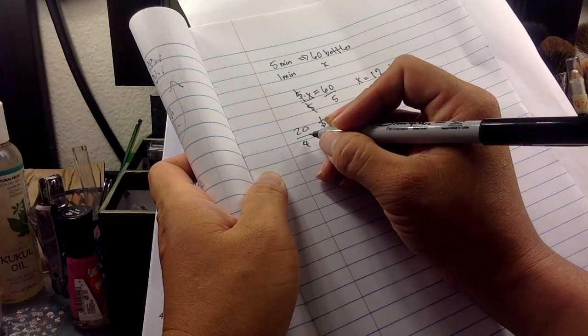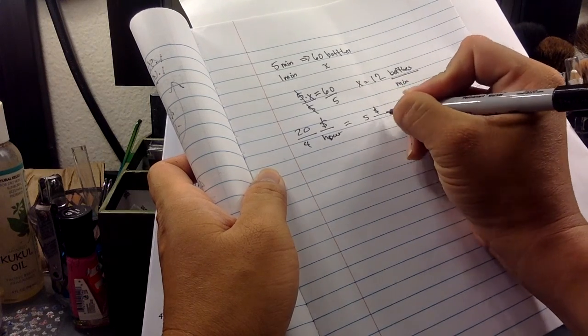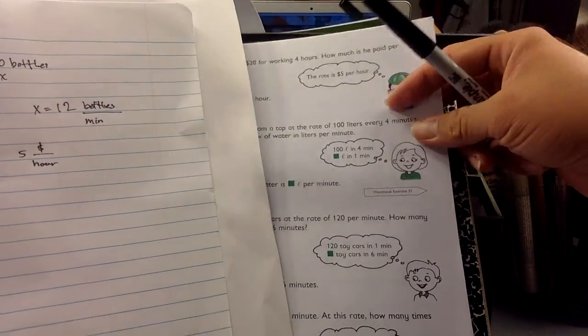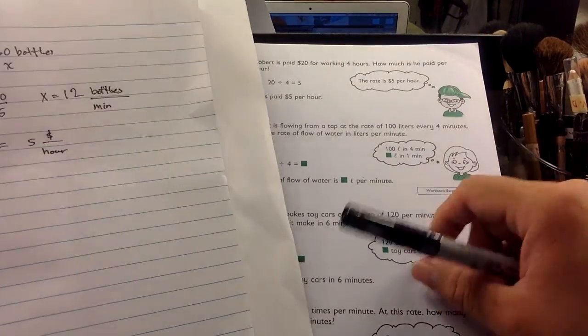So if I were to simplify this fraction, 20 divided by four is five. Apparently Robert is making less than minimum wage in Hawaii at least, and his rate is $5 per hour. Okay.